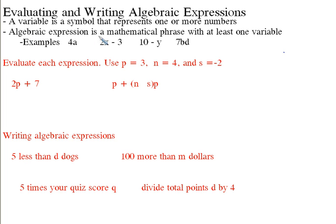An algebraic expression is a mathematical phrase with at least one variable. So it could just be something that says A, or A plus B, or in this case 4 times A. Remember, since they are right next to each other, it's 4 times A. This is 2 times X and then subtract 3 from the result of 2 times X. 10 minus Y, 7 times B times D.